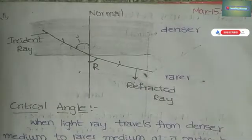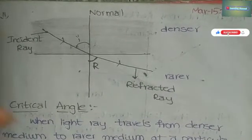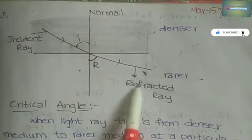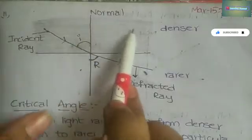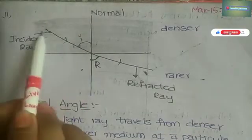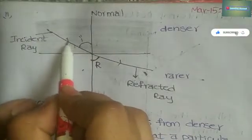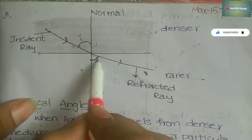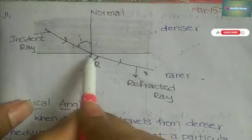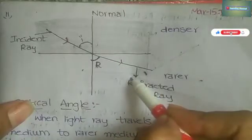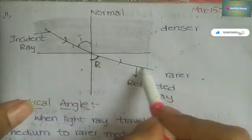First, we have to draw a normal ray, denser medium, and rarer medium. This is the denser medium, shade it with a pencil, and this is the rarer medium. This is the incident ray — we have to show the arrow — and this is the angle of incidence and the angle of refraction. When light travels from denser medium to rarer medium, it bends.